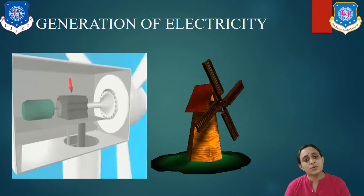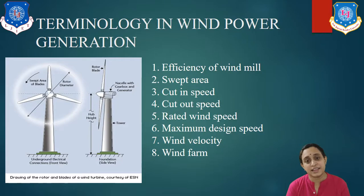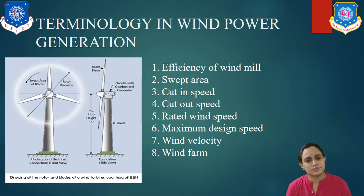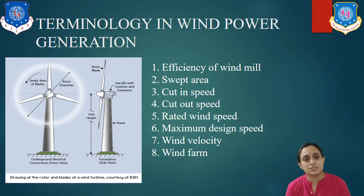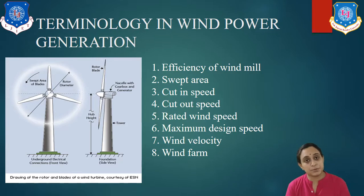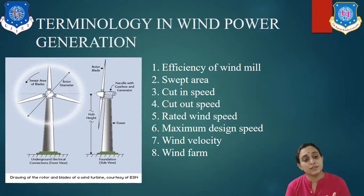Now let us explain the terminology of wind power generation. There are eight terminologies: cut-in speed, efficiency of windmill, swept area, cut-out speed, rated wind speed, maximum design speed, wind velocity, and wind farm.